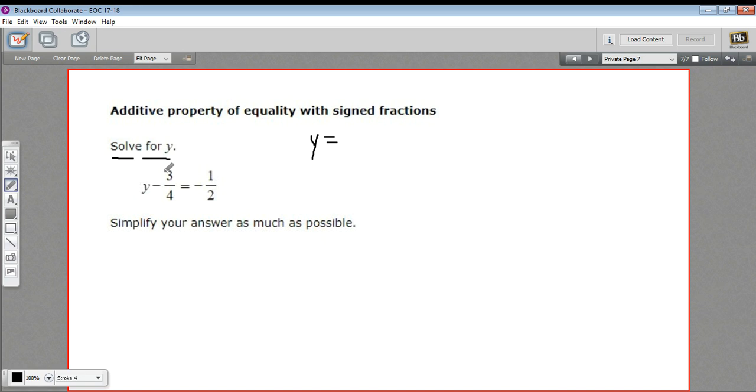In this case, we've got this negative 3 fourths on this side of the equation, which is a problem. If it was gone, then y would be alone on this side. So we want to get rid of that negative 3 fourths. How are we going to do that? Well, let me rewrite this problem just so I can leave a little space for myself. So y minus 3 fourths equals negative 1 half.